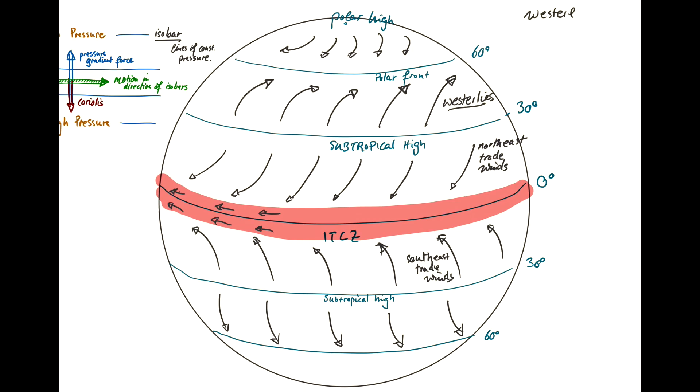Westerlies means winds blowing from the west. Around the north pole, you have circulation driven predominantly clockwise around the north pole and anticlockwise around the south pole.